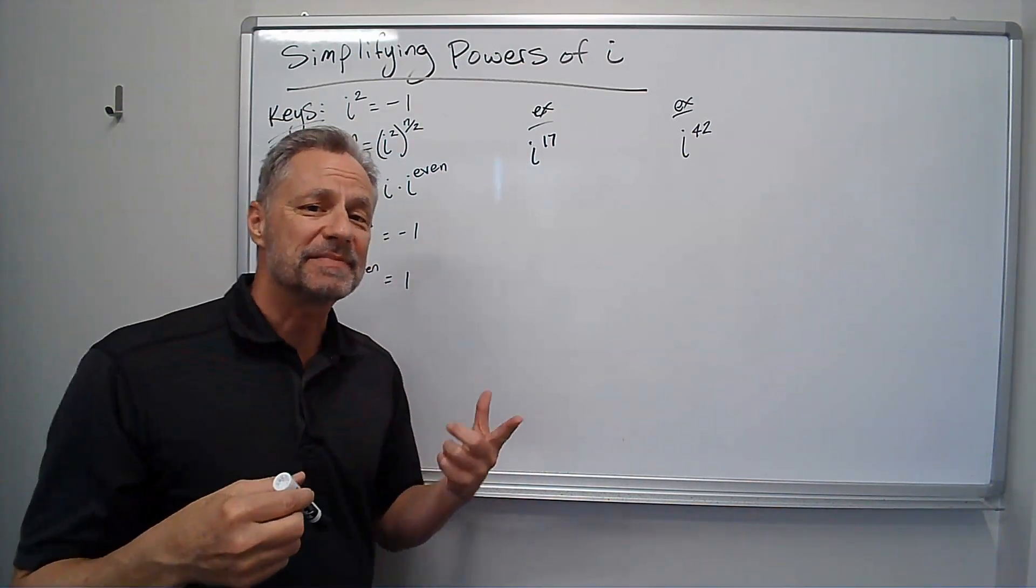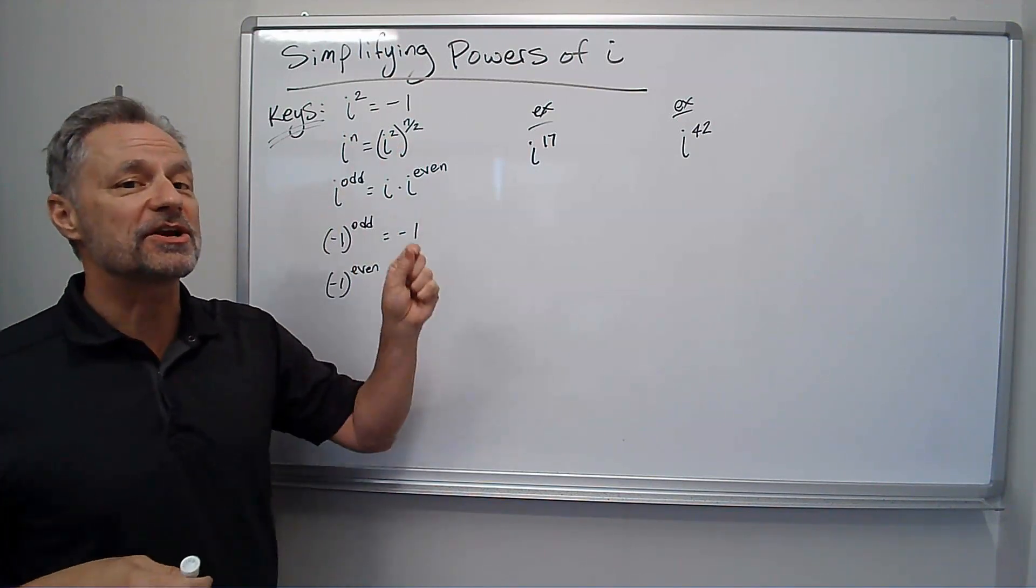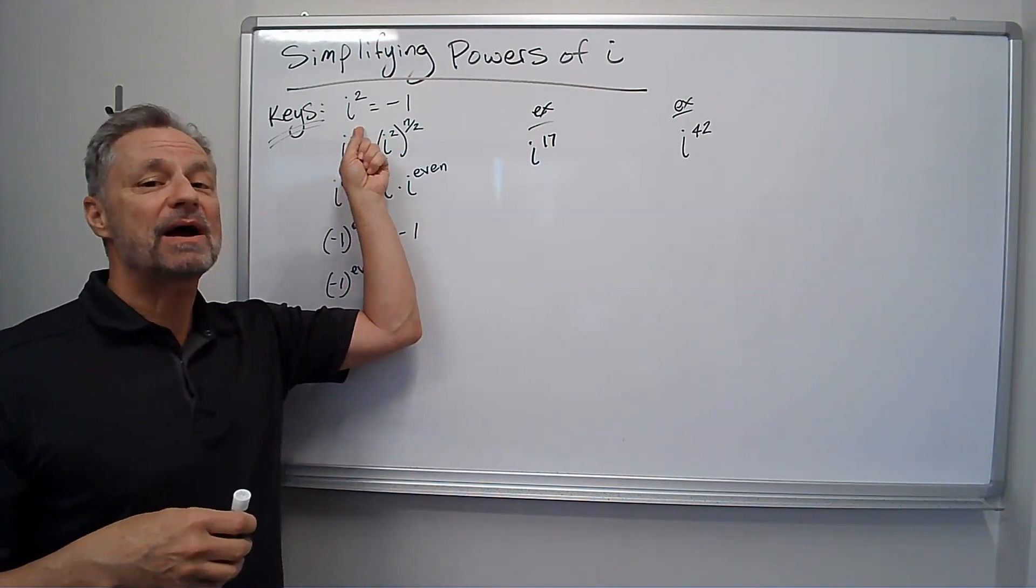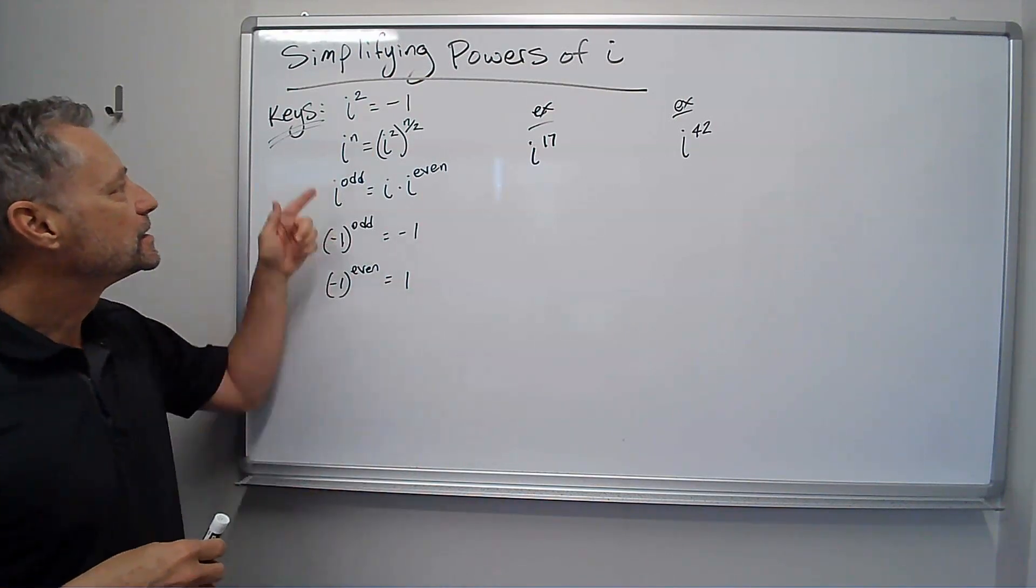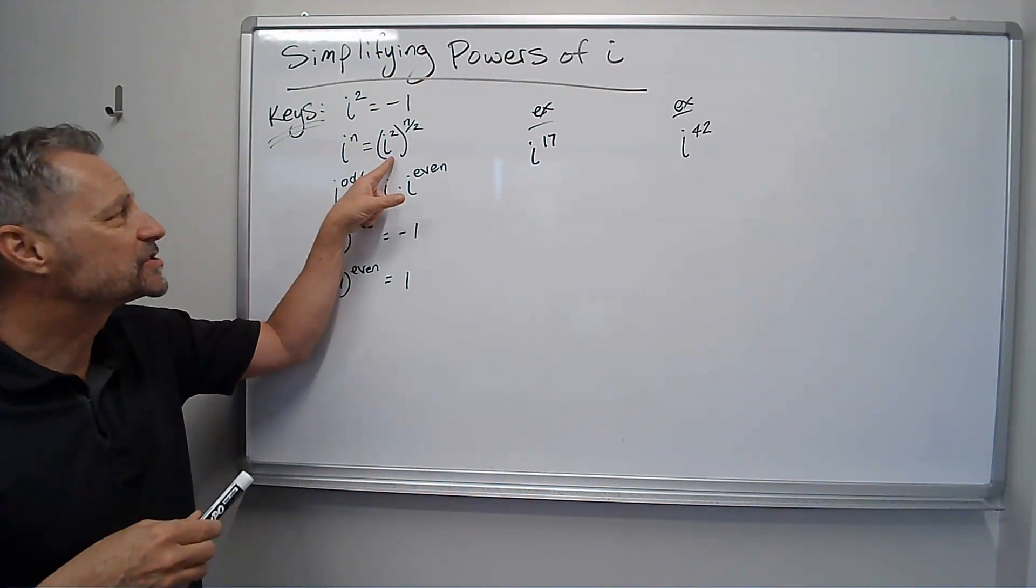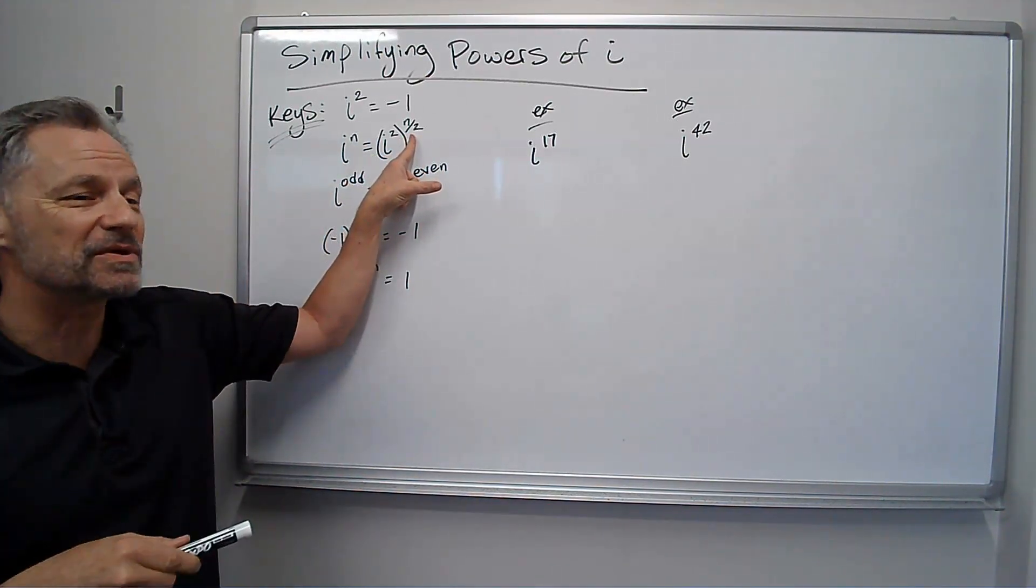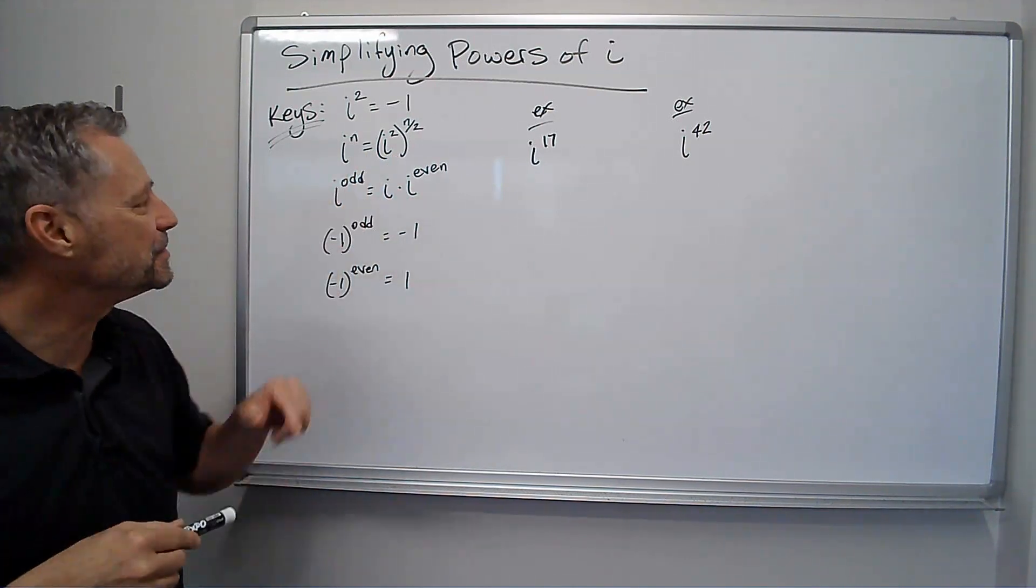I've written down some keys. The biggest key is i squared is negative 1. What we're going to try to do is get things in powers of i squared because I know what that equals. If I have i to the n power, that's i squared to the n over 2 power. I'll show you how that works when we do that, but I'm going to use that quite a bit.